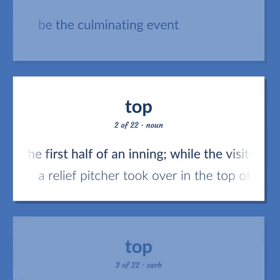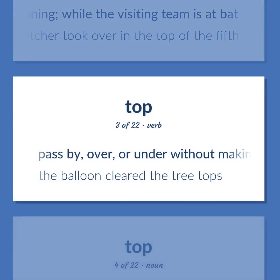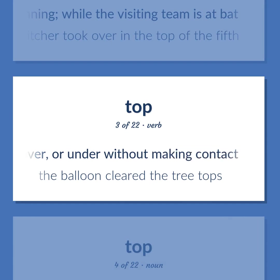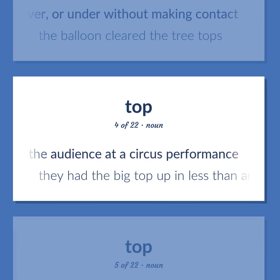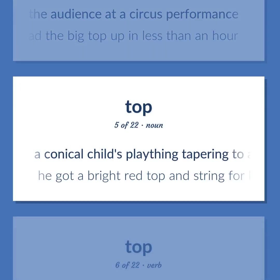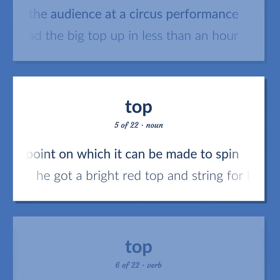TOP: The first half of an inning while the visiting team is at bat — a relief pitcher took over in the top of the fifth. Pass by, over, or under without making contact — the balloon cleared the treetops. A canvas tent to house the audience at a circus performance — they had the big top up in less than an hour. A conical child's plaything tapering to a steel point on which it can be made to spin — he got a bright red top and string for his birthday.